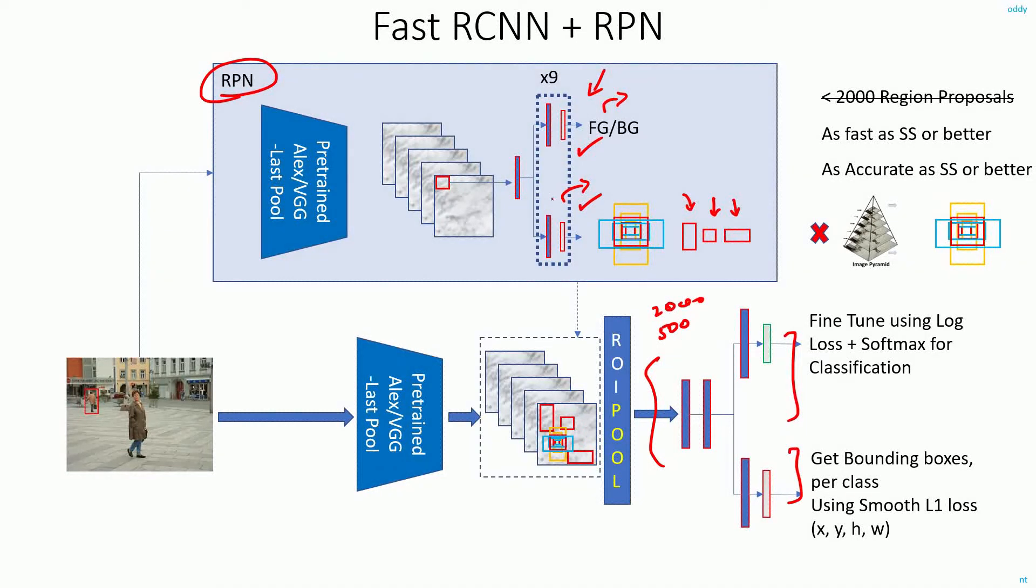So this way I'll have nine bounding box regressors and correspondingly I will have nine different classifiers for each of the anchor boxes. This is how I change or modify the design of region proposal network to reduce the number of proposals. So this problem is solved.